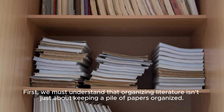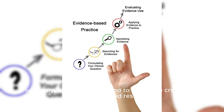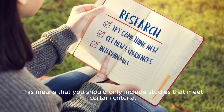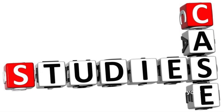First, we must understand that organizing literature isn't just about keeping a pile of papers organized. It's about understanding the context of your study, making connections between different studies, and identifying gaps in the literature. Secondly, always keep in mind to follow the criteria for evidence-based research — you should only include studies that are recent, well-designed, and relevant to your topic.